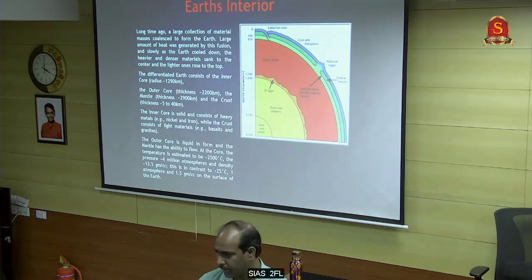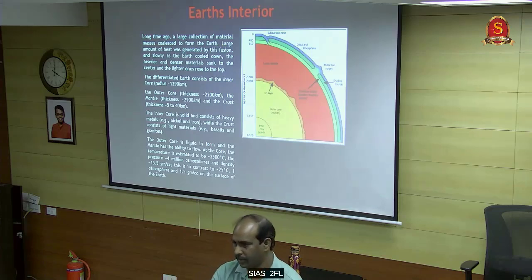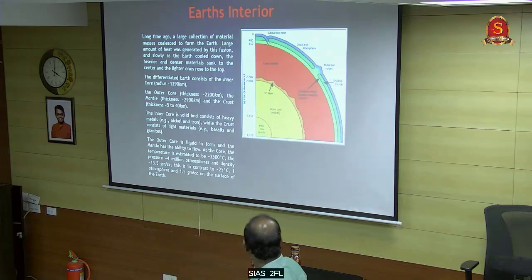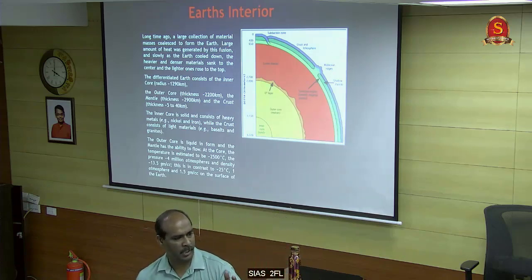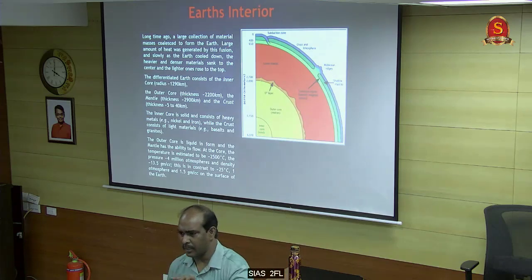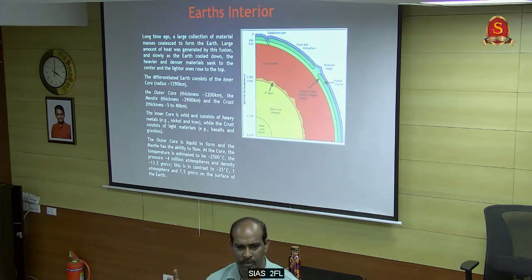The earth is rotating - it is like an egg. You have a yellow yolk, then white, then a thin outer plate. Similarly, the earth has an outer layer called the lithosphere, which is about 100 km thick. When the earth rotates, due to this rotational movement, the layers move rapidly over each other.